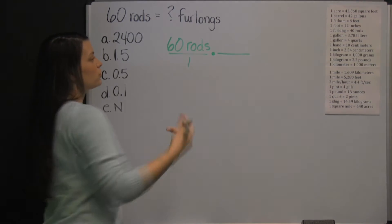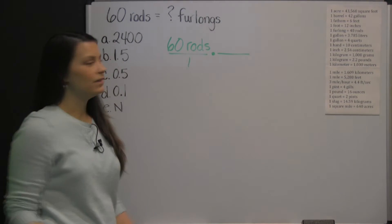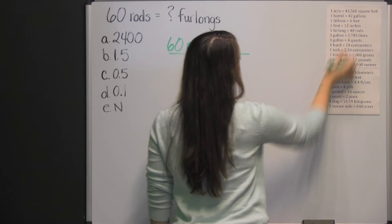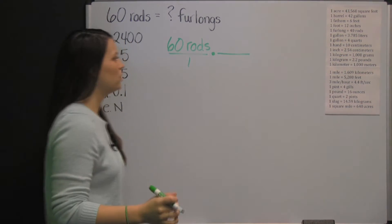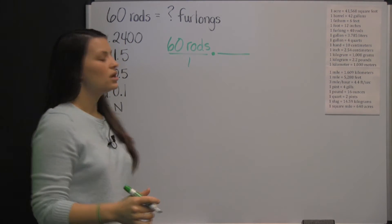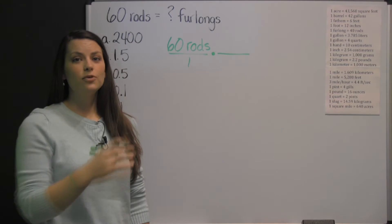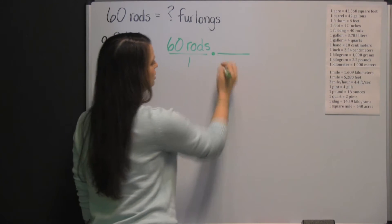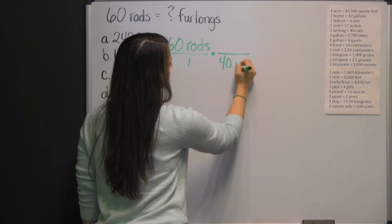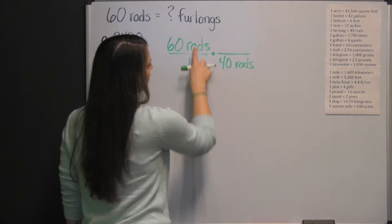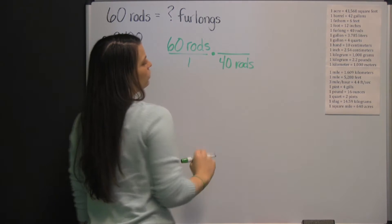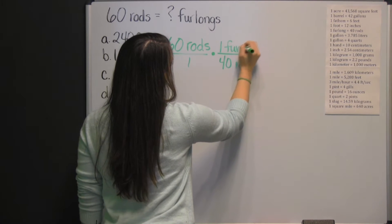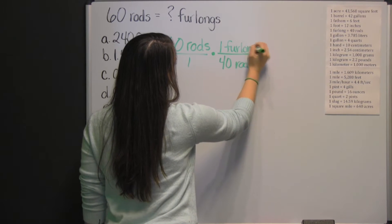If it includes rods and furlongs, it'll be even quicker. We have this conversion factor: one furlong equals 40 rods. You want to make sure that you put your units in diagonal positions, so 40 rods is going to go in our denominator so that we can cross-cancel rods and convert to furlongs. Put your one furlong in the numerator.